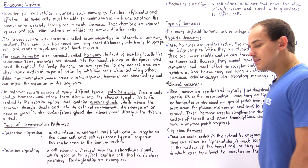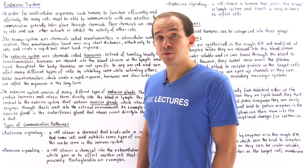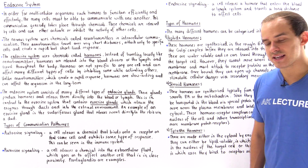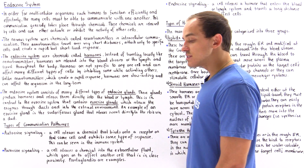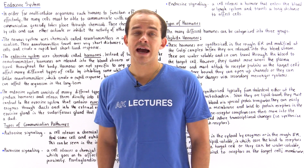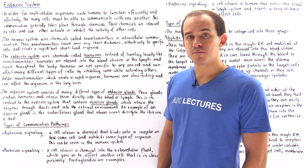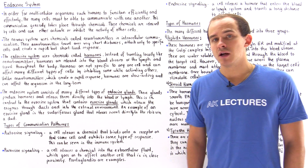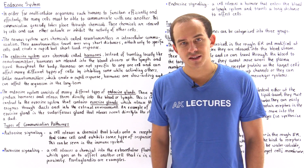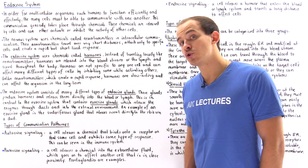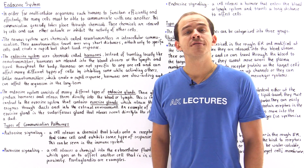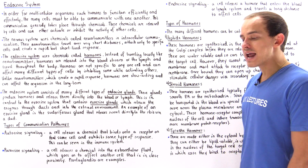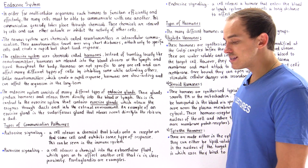Now we're going to discuss a different type of communication system in the body known as the endocrine system. The endocrine system creates a special type of chemical known as a hormone. The hormone is released by the cell into the bloodstream or into the lymph system, and unlike the neurotransmitter, it actually travels over a very long distance throughout the entire body before it affects the target cell.